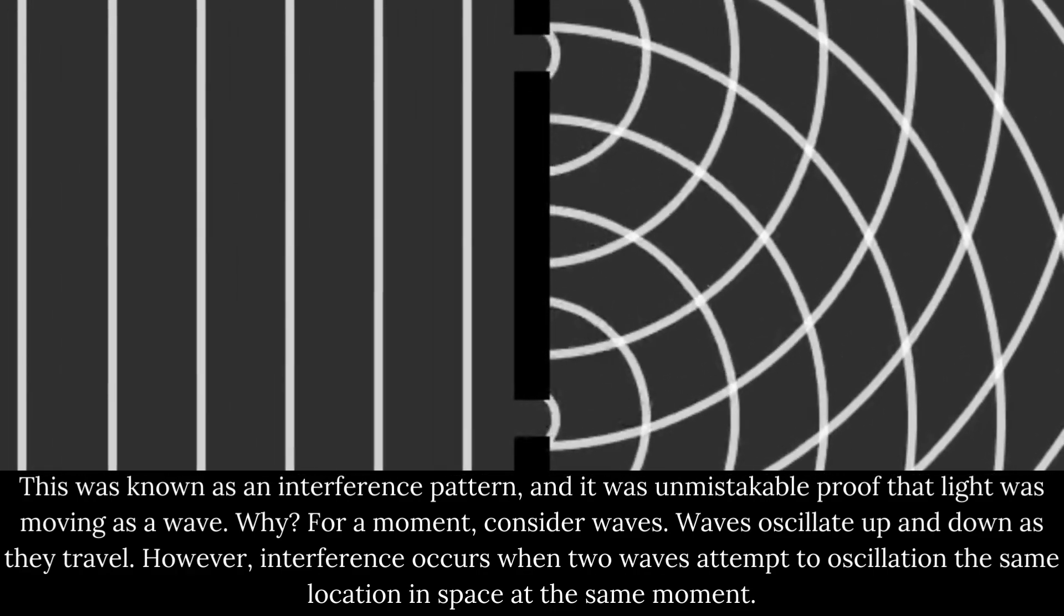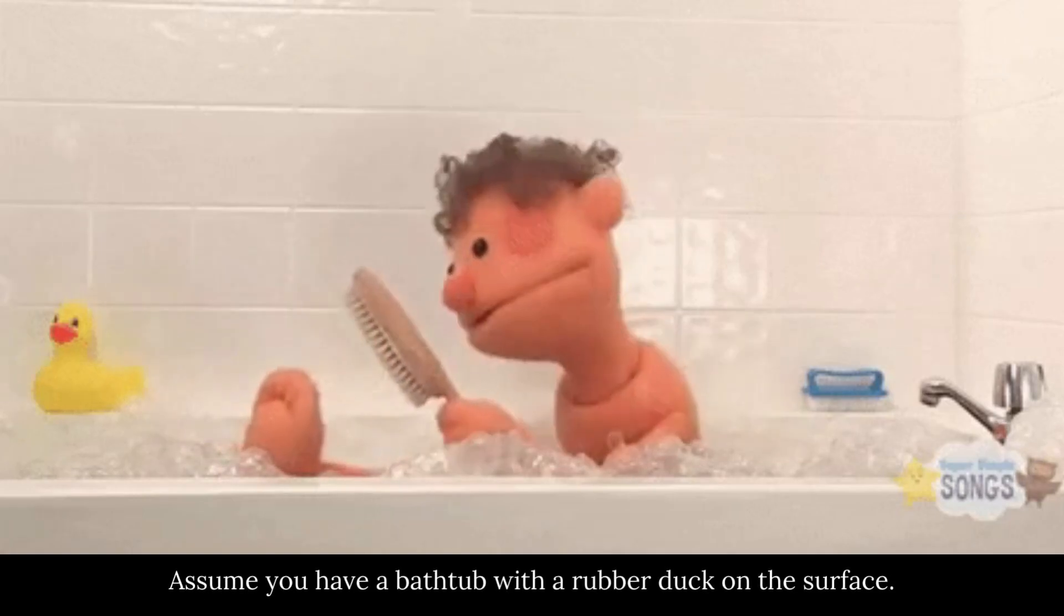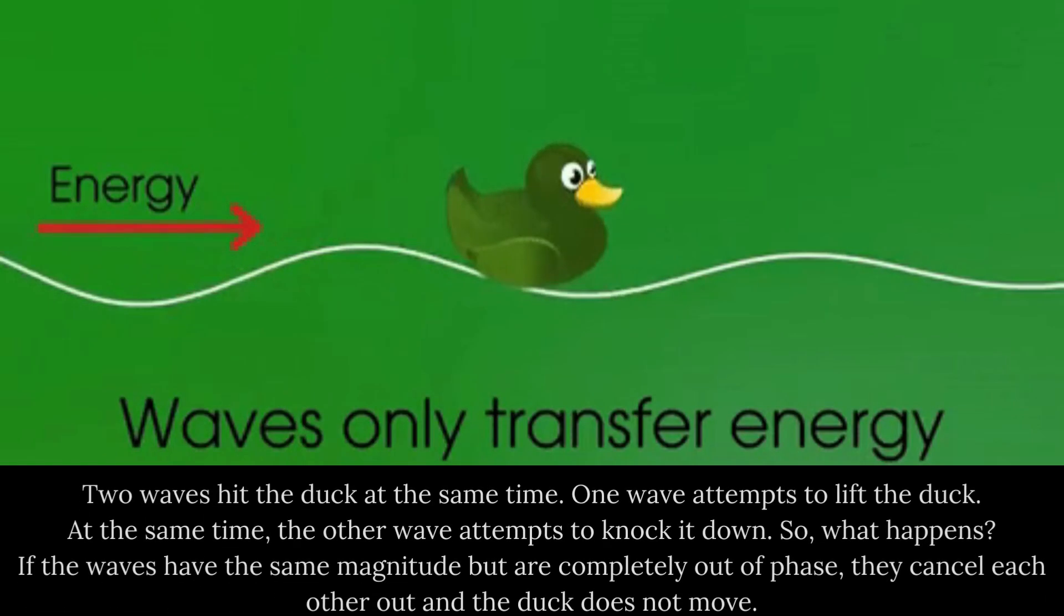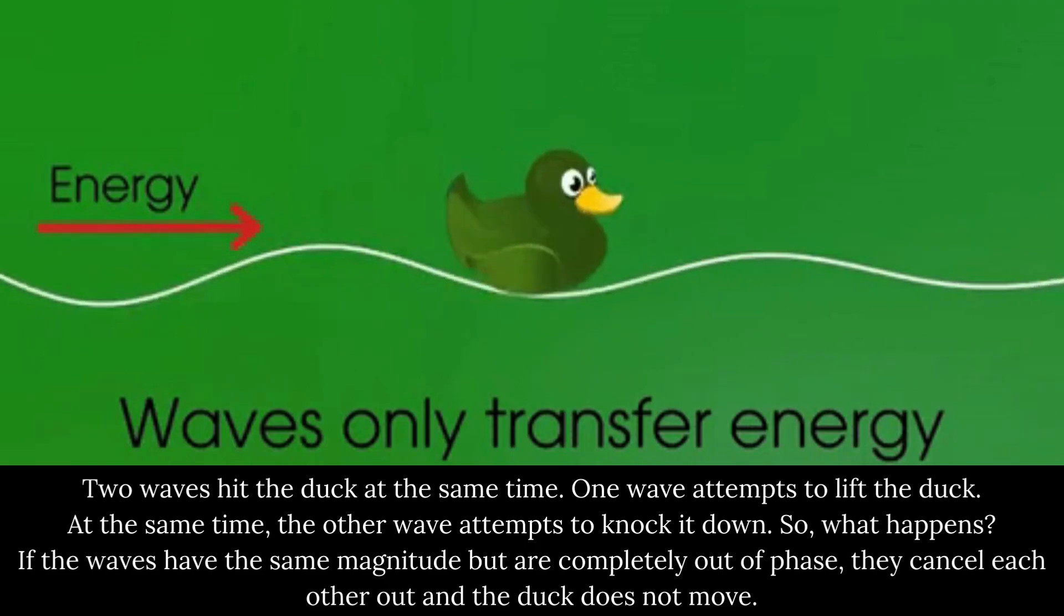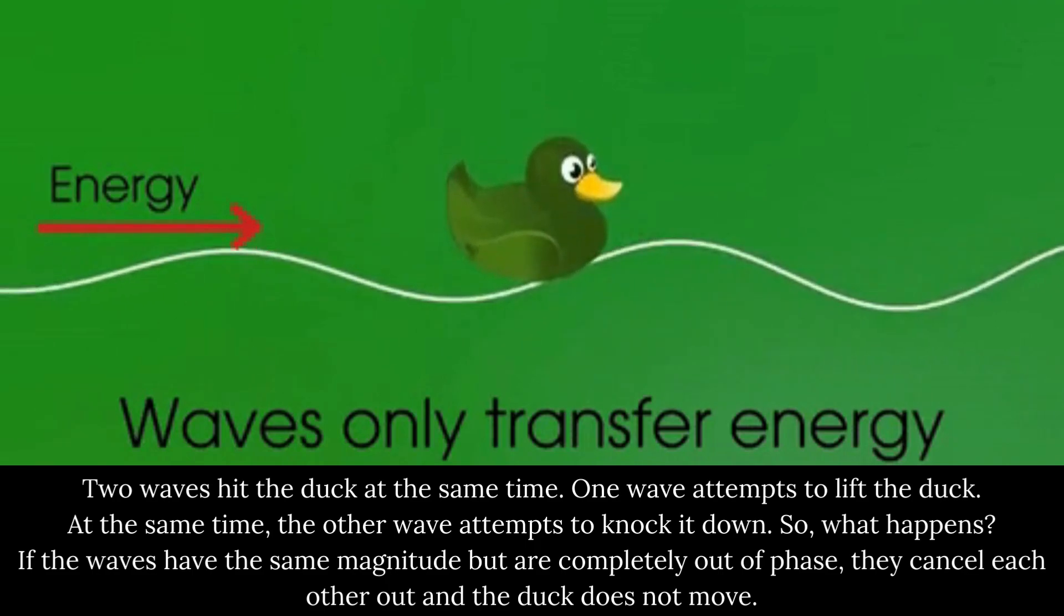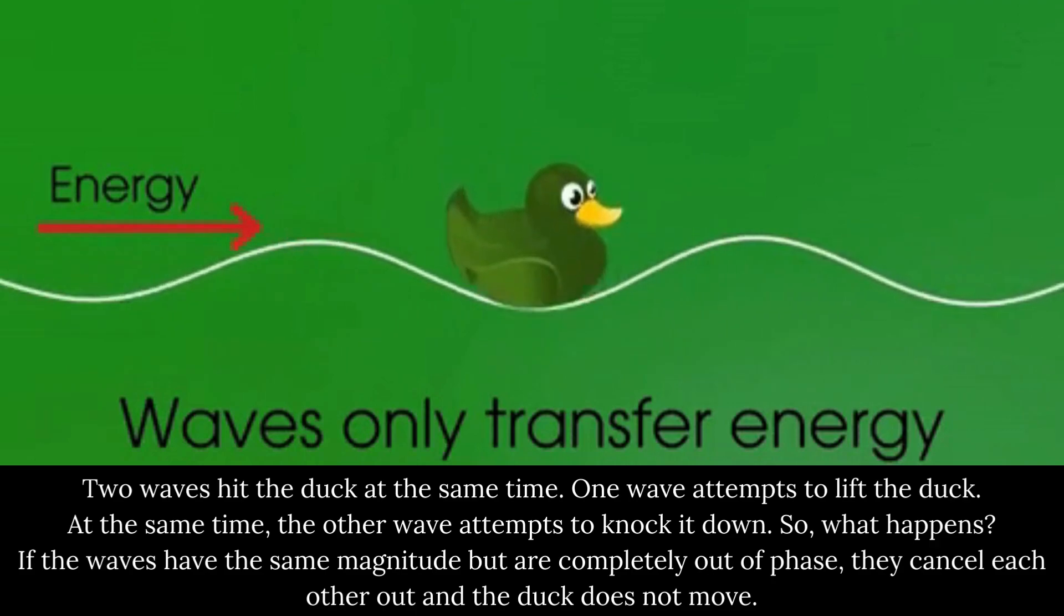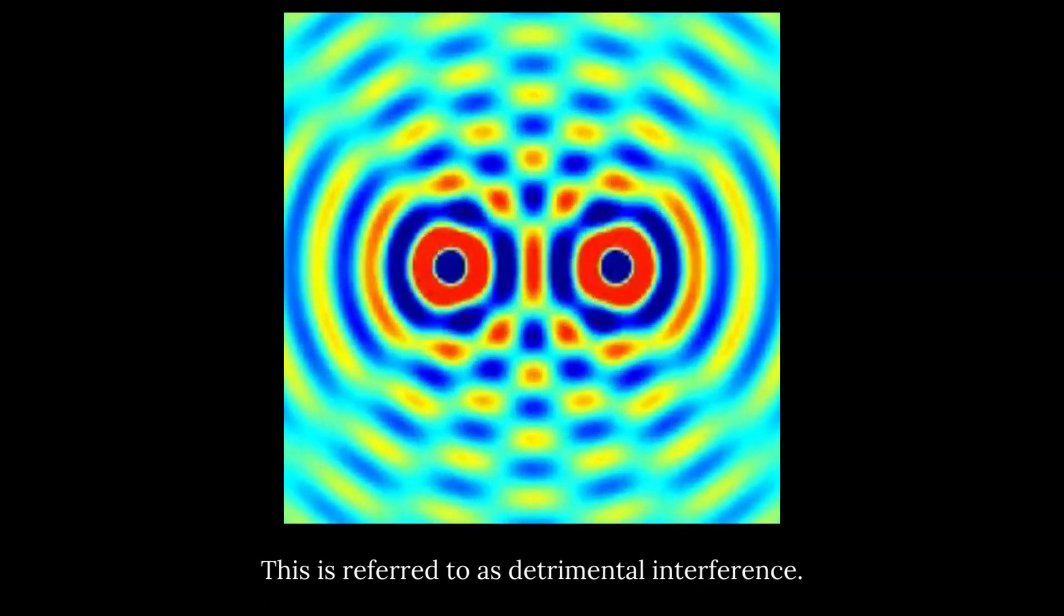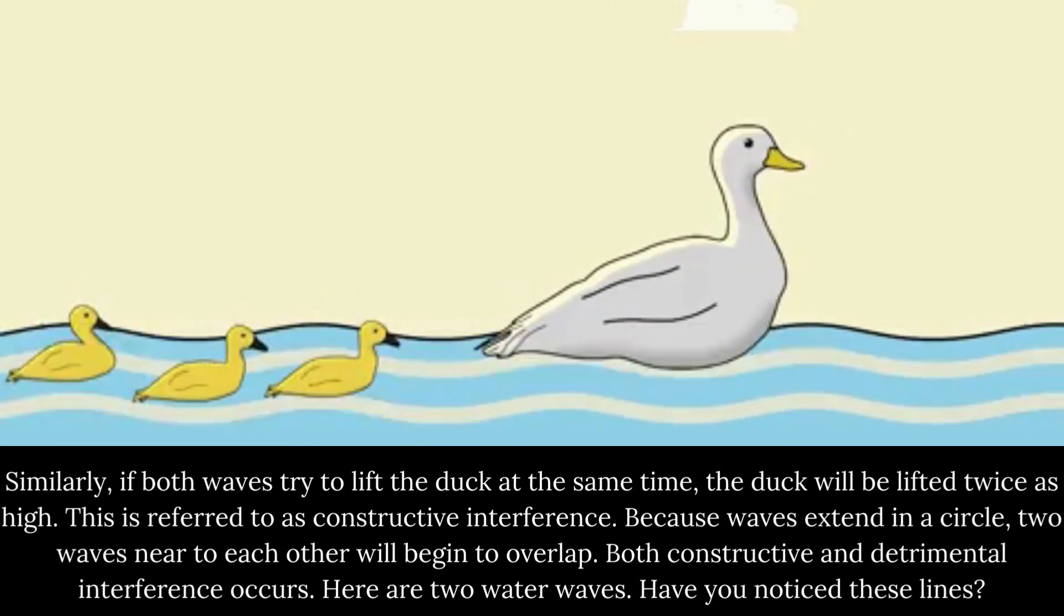Why? For a moment, consider waves. Waves oscillate up and down as they travel. However, interference occurs when two waves attempt to oscillate the same location in space at the same moment. Assume you have a bathtub with a rubber duck on the surface. Two waves hit the duck at the same time. One wave attempts to lift the duck. At the same time, the other wave attempts to knock it down. So, what happens? If the waves have the same magnitude but are completely out of phase, they cancel each other out and the duck does not move. This is referred to as destructive interference. Similarly, if both waves try to lift the duck at the same time, the duck will be lifted twice as high. This is referred to as constructive interference.